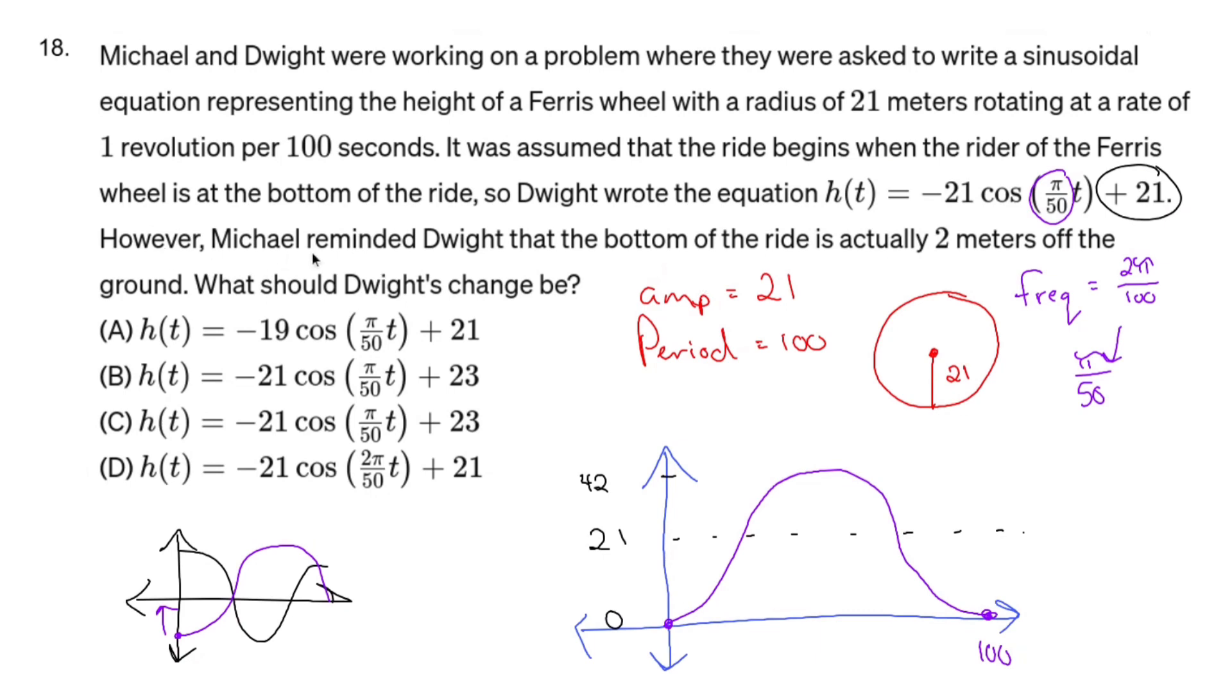Oh, but Michael swoops in and reminds Dwight that the bottom of the ride actually is two meters off the ground. So two meters off the ground is going to be up one, two, making the midline 23, the bottom 2 and the top 44. Now, how does that change this function? Just the midline. That's it. So all we have to do is just change that to 23.